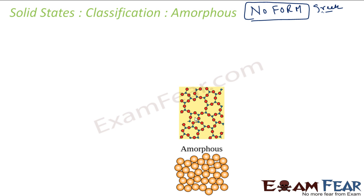The arrangement of the constituent particles — atoms, molecules, and ions — is only short-range. There is actually no long-range order, and even if there is some arrangement in some cases, it is very, very short-range, maybe 50, 60, or 100 particle patterns. Sometimes we do see some regular periodic arrangement, but this pattern only extends for a short distance.